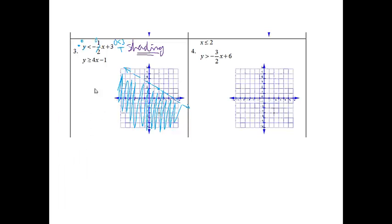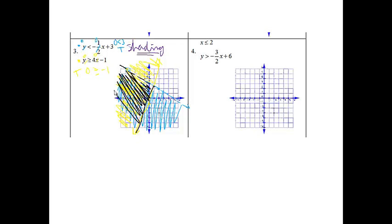Now using yellow: I'm going to start down at negative 1, then go up 4, over 1, up 4, over 1. I get to make it a solid line because there is an equal sign. Testing (0, 0): I get 0 is greater than or equal to negative 1 — that is true, 0 is bigger. So I shade the side of the line that has (0, 0) on it. Then we look for where both colors overlap — it's bounded by that dotted line and the solid line, and that portion right there.